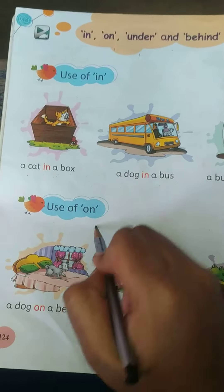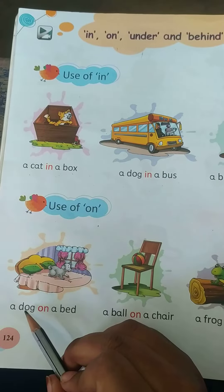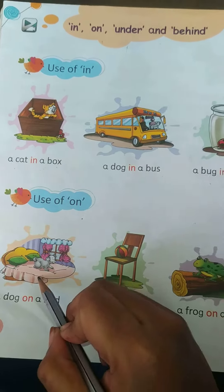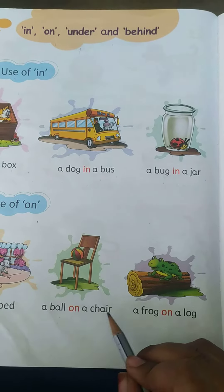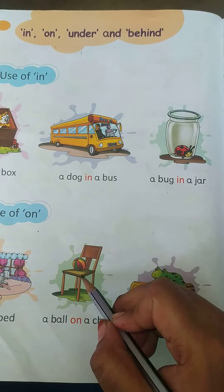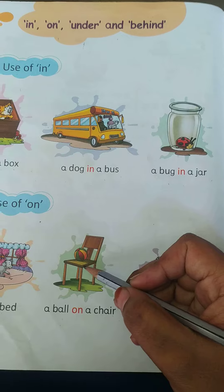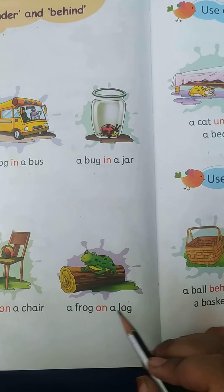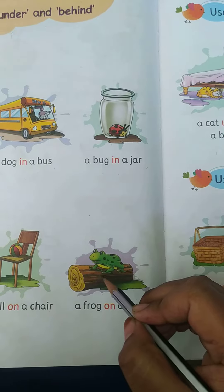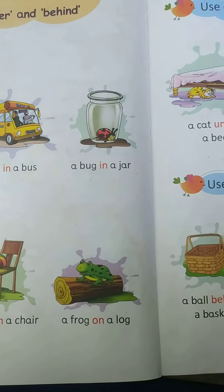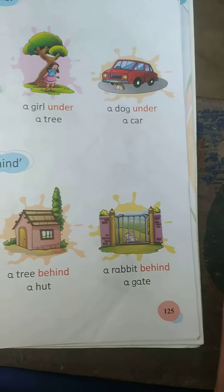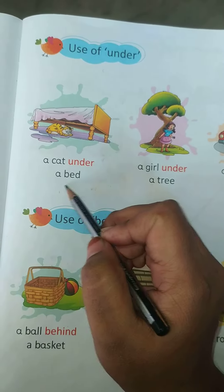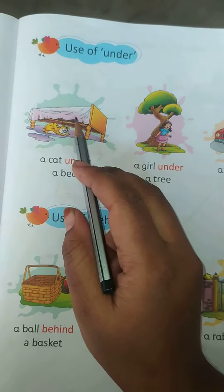Use of on: a dog on a bed — this is a dog, this is a bed. A ball on a chair — this is a chair, the ball is on the chair. A cat on a couch — this is a cat on the couch.